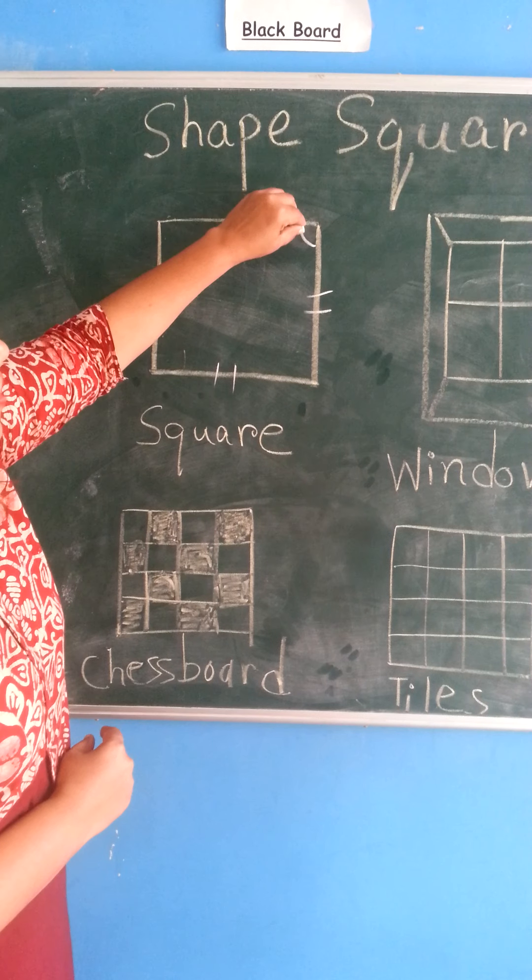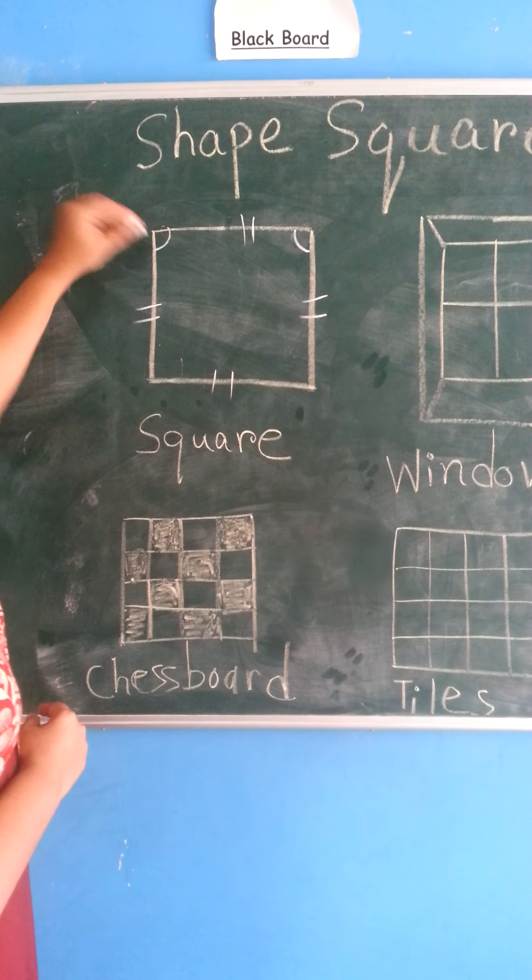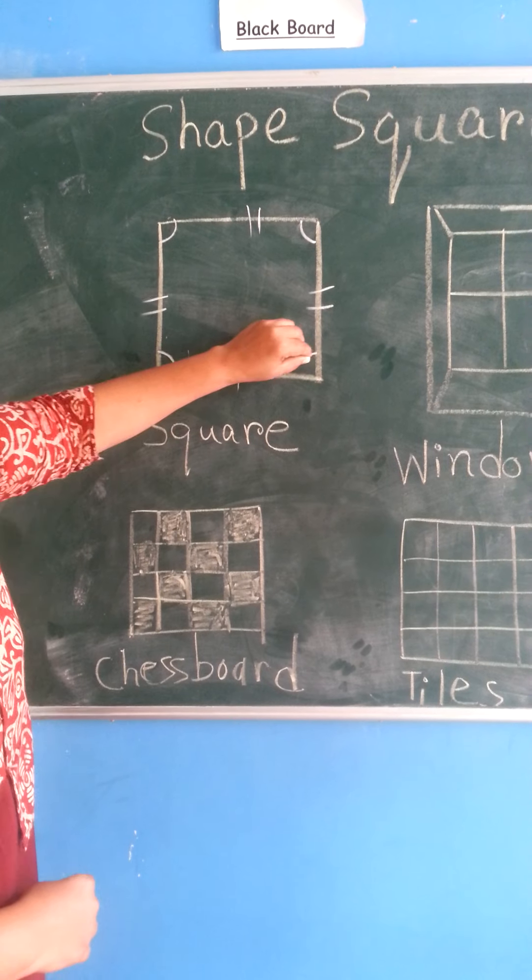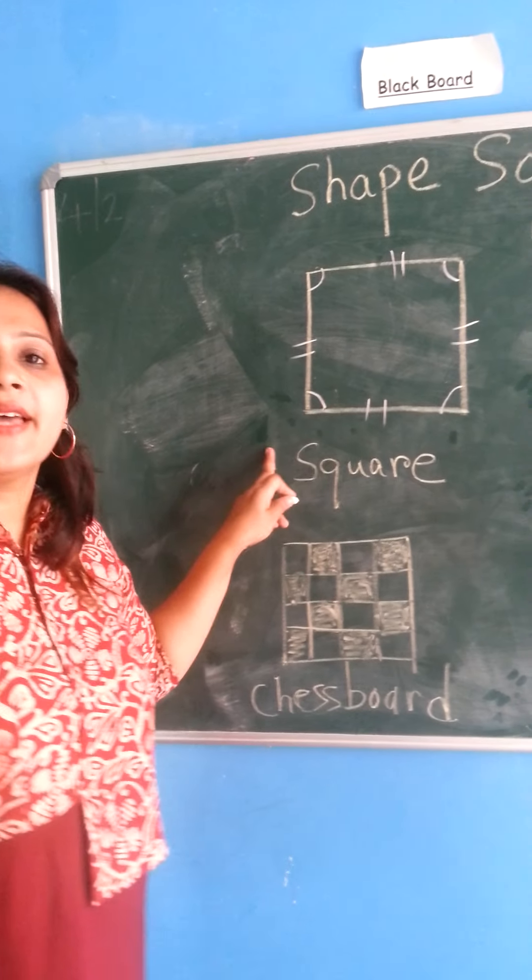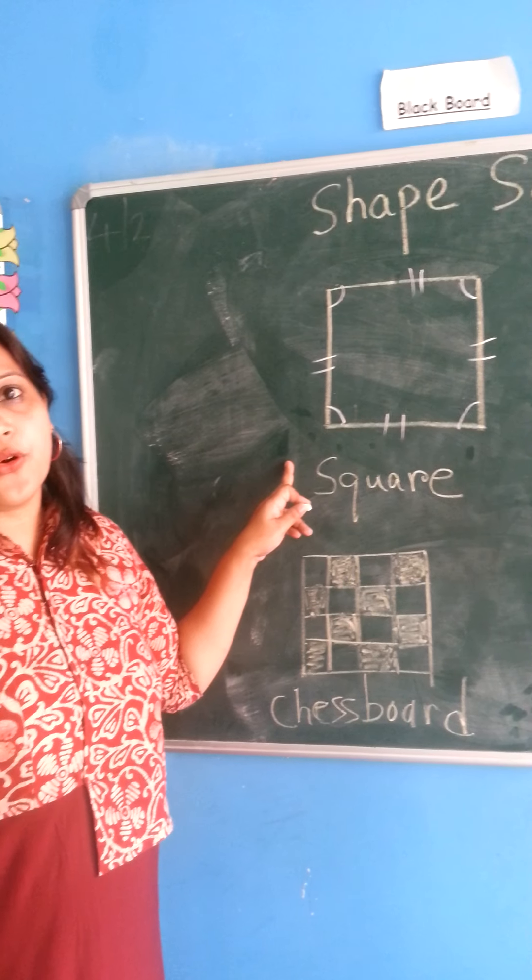Chalo hums ki corners kaam karte hai. One corner, two corner, three corner and four corner. Four corners. Square has four equal sides and four corners.